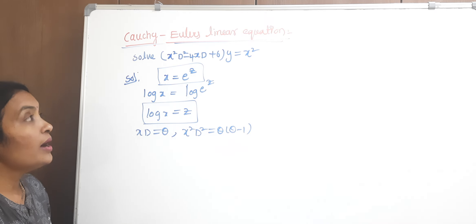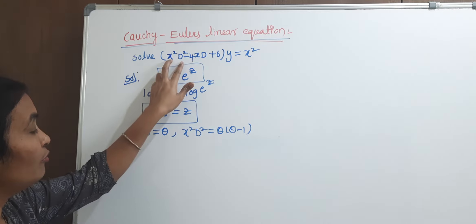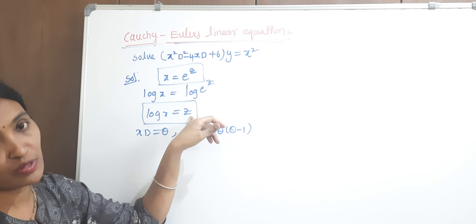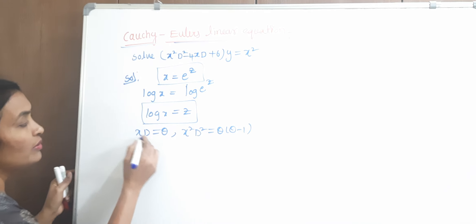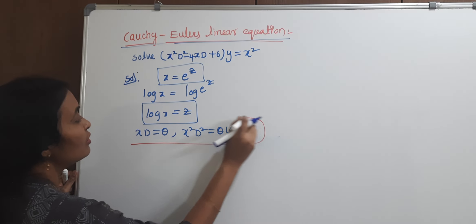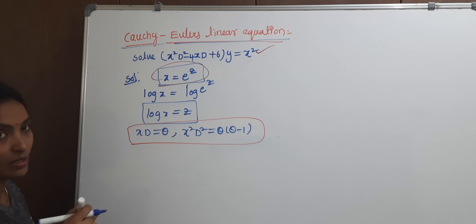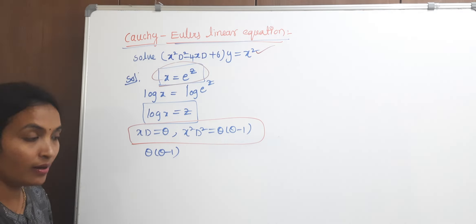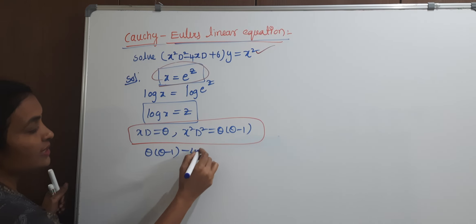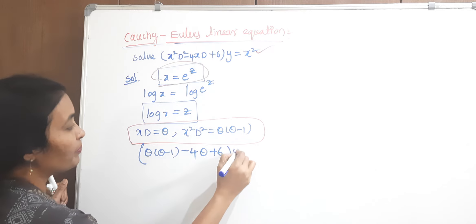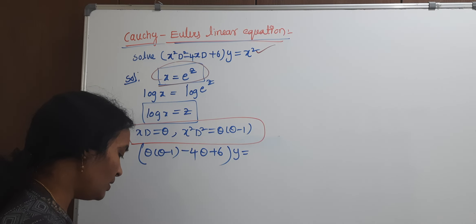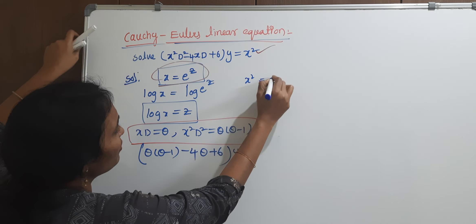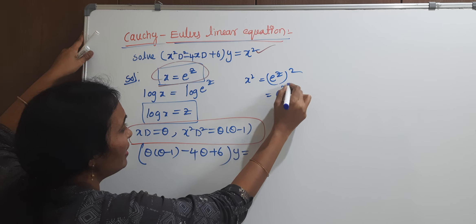We consider the differentiation in terms of theta and the function in terms of z. We substitute into the equation: x squared·D² becomes theta(theta minus 1), minus 4x·D becomes minus 4·theta, plus 6·y equals — since x equals e^z, x squared becomes e^(2z).